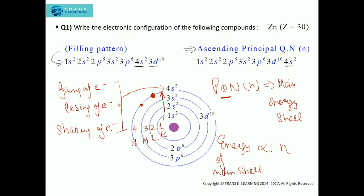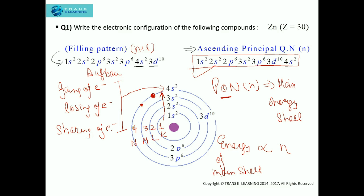Keeping the reactivity of an atom as the basis, writing the configuration in ascending order of principal quantum number is the appropriate method. This is the correct method of writing the electronic configuration of any element. This pattern is as per the n plus l rule — the Bohr-Bury rule — which forms the basis of the Aufbau principle for filling electrons in various orbitals. However, the filling-order configuration cannot be used as the final electronic configuration; we must write it with ascending principal quantum number.